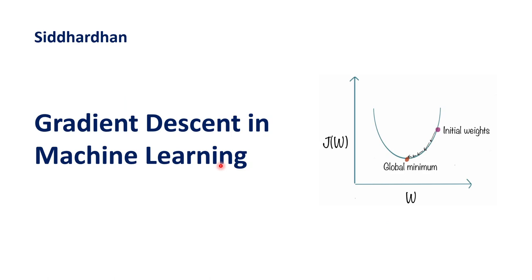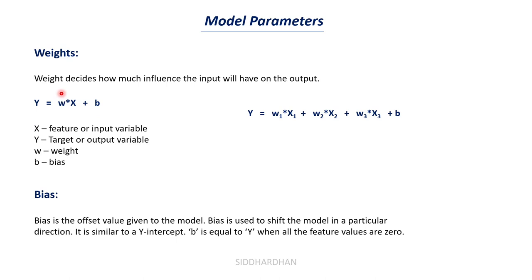Gradient descent is a very important concept in both machine learning and deep learning. Weight and biases are model parameters. Weight decides how much influence an input will have on the output. In linear regression the equation is y = wx + b, and for multiple linear regression: y = w1x1 + w2x2 + w3x3 + b in a three-dimensional space.